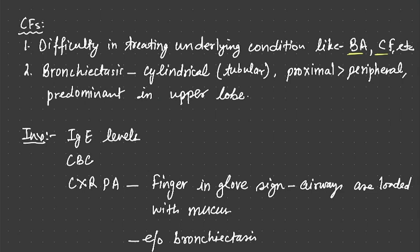The most important cause that can be present is ABPA. There is bronchiectasis also. Bronchiectasis cylindrical, which is also tubular, proximal more than peripheral, predominantly in upper lobes. So bronchiectasis can be present in ABPA patients.